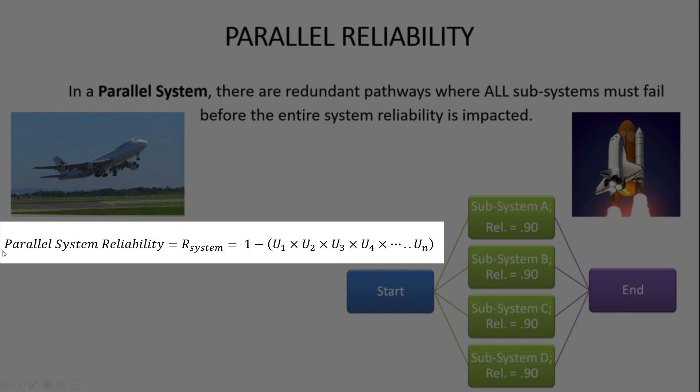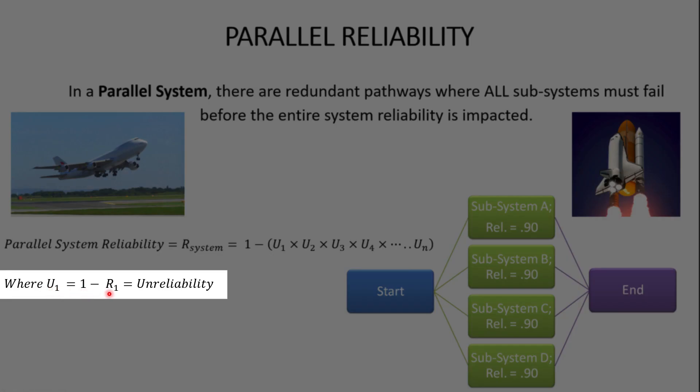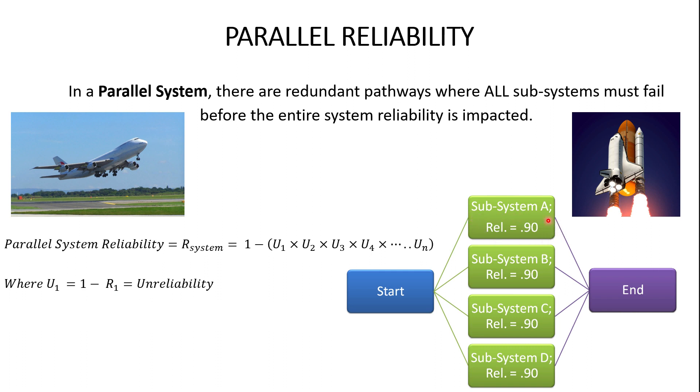And the way we calculate the reliability of a parallel system like this is we take one minus the unreliability multiplied together. So what is unreliability? This is a new term. So unreliability is simply just one minus reliability. So here in this subsystem, we can see that reliability is given as 90%. We can easily calculate the unreliability of the subsystem as one minus 90% to get 10%. Now, all of these subsystems in this example have the same reliability, which means they also have the same unreliability. So we can simply plug that into our equation, one minus, and now we're multiplying the unreliabilities together. And we can calculate the reliability of this system as 99.99%.